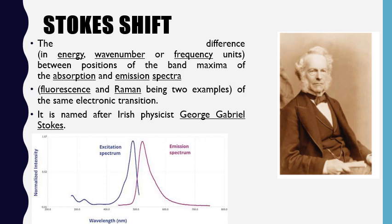Before going into detail, first we will talk about the term Stokes shift. As the term is self-explanatory, shift means something is shifting — in the spectrum, the peaks are shifting. Stokes was the first person to talk about shifting in the peaks of emission. The difference between the position of the band maxima of absorption and emission spectra is called Stokes shift.